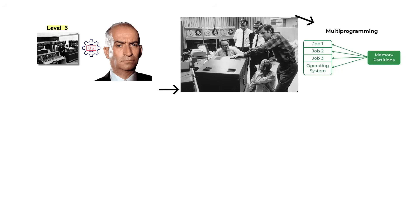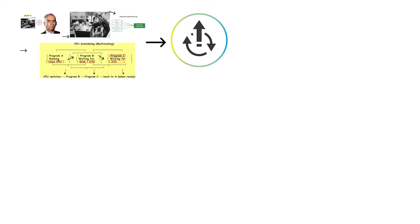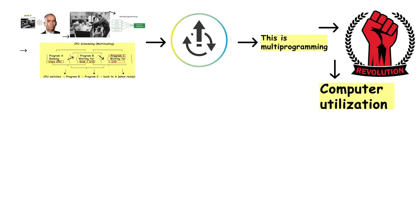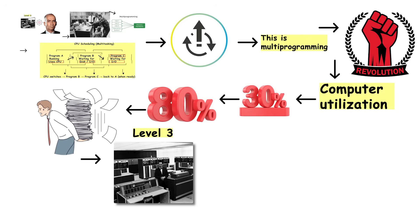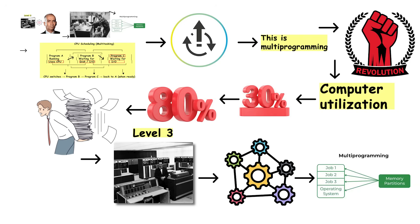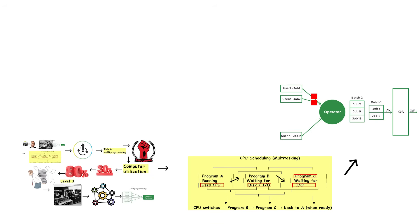Keep multiple programs in memory at once. When program A is waiting for disk access, switch the CPU to program B. When B waits for I/O, switch to program C — keep that expensive CPU busy constantly. This is multiprogramming, and it changed everything. Suddenly, computer utilization jumped from maybe 30% to 80% or higher. Operating systems became truly complex because they had to manage memory for multiple programs, schedule CPU time fairly, and prevent programs from interfering with each other.